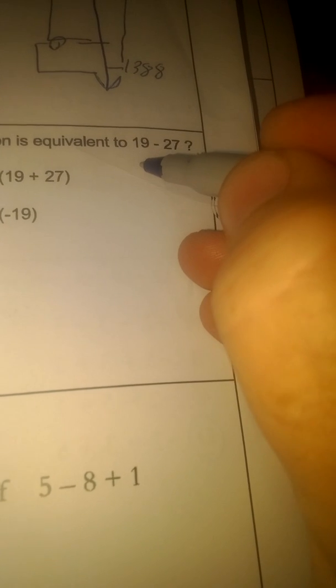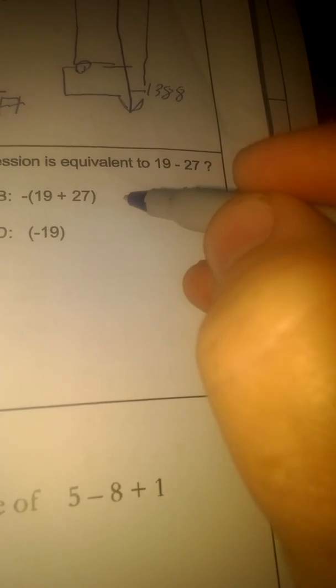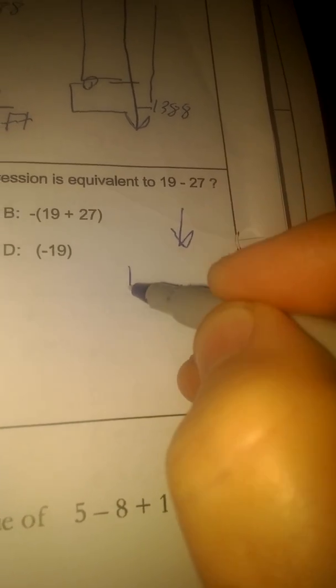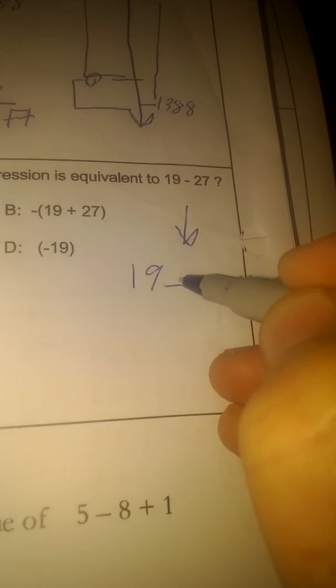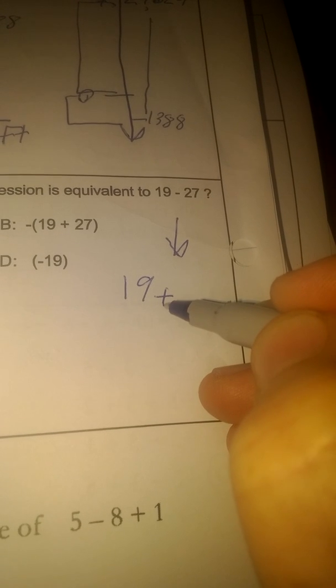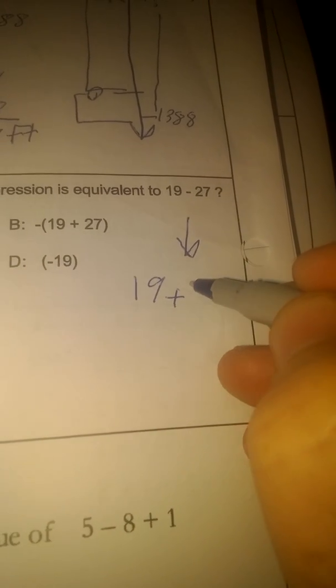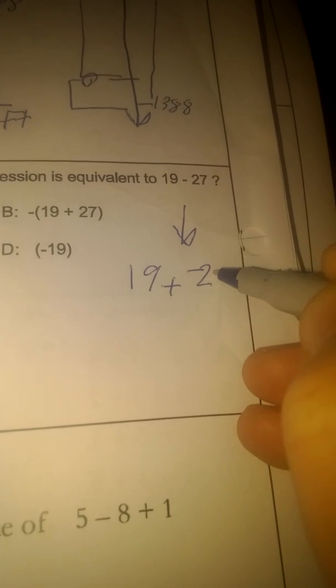If we use the keep-change-change approach, one way to think about this is we can turn this into addition. So we'd say 19 plus, so we change, keep, change, negative 27.